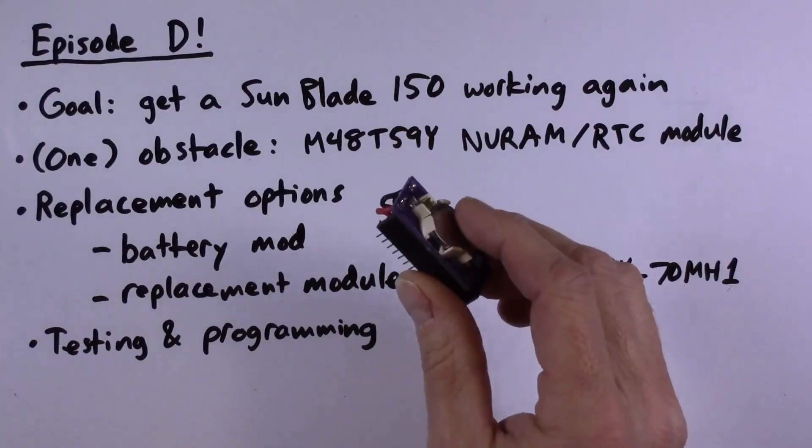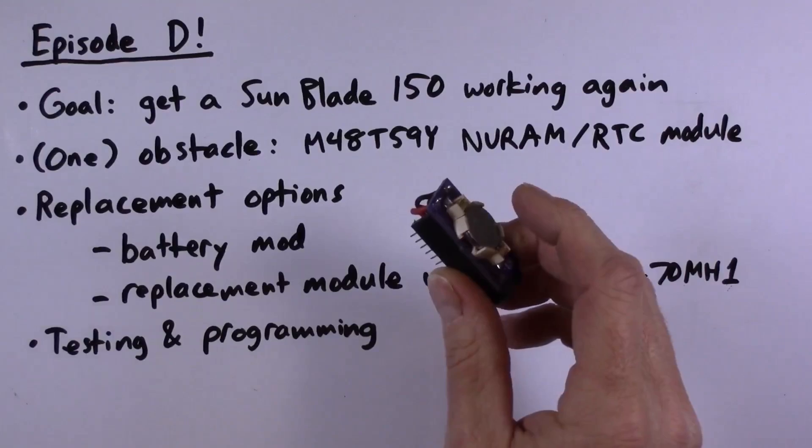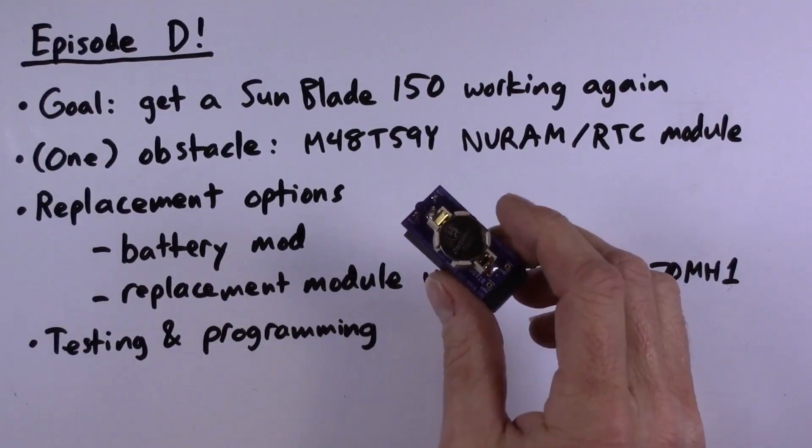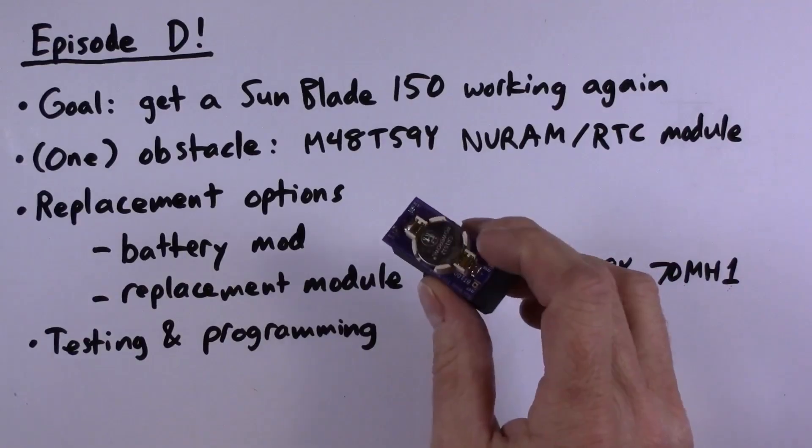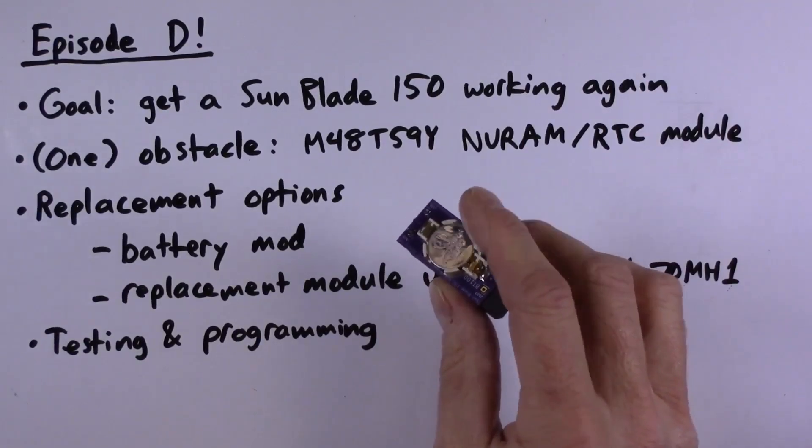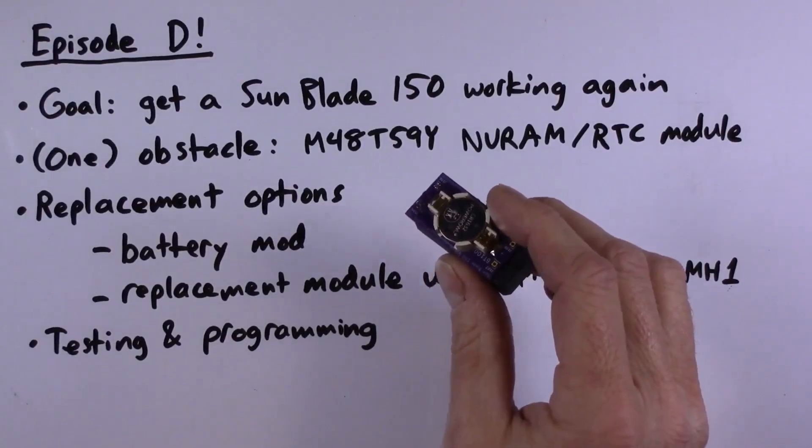The second problem is that if you don't disconnect the internal dead batteries, your new coin cell is effectively charging these internal dead batteries, which is going to not have great effects for battery life. So this is a possibility, but it's not my preferred one.